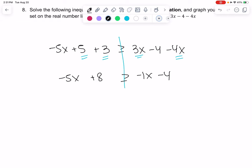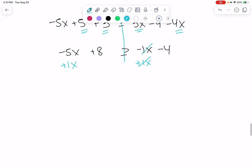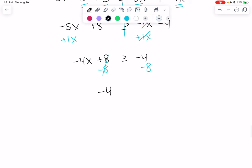Just like an equation, let's get the x's on one side and the numbers on one side. I'm going to add 1x. For the most part it's the same as an equation, there's just one exception in a second. Negative 5 plus 1 is negative 4. Let's move the 8. Minus 8 minus 8. We get negative 4x still greater than or equal to negative 12.